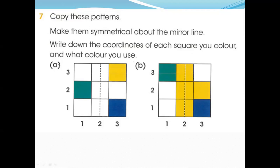Where are we starting from? Starting from A. Where is blue? You can see here: white, green, and white. Listen to the question again - make them symmetrical about the mirror line. So what color do we need here? You can see the opposite side - it is blue. So we need to color this blue. Here it is a blue color.